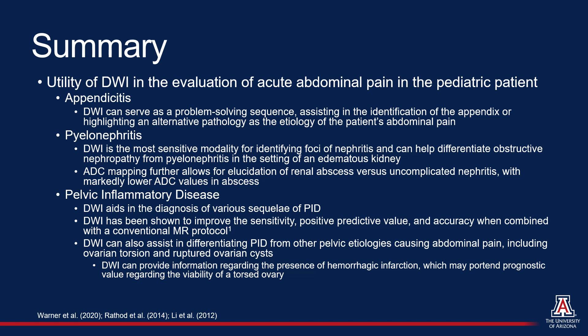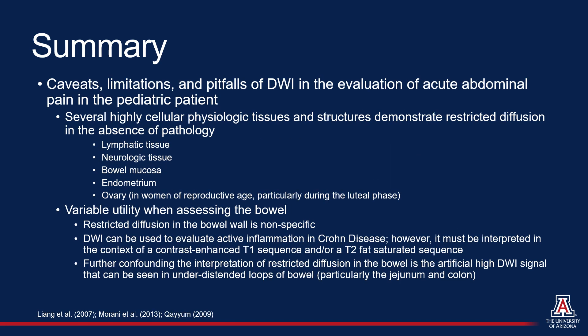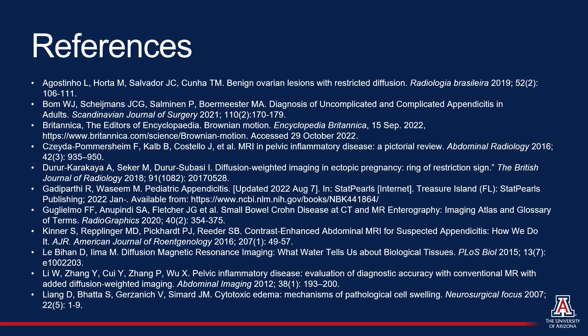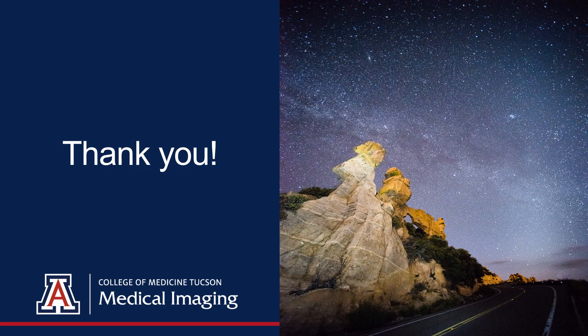In summary, DWI is a valuable problem-solving sequence in the evaluation of acute abdominal pain, and knowledge of DWI properties can assist radiologists in the interpretation of MRI examinations performed for acute abdominal pain, particularly when performed with a rapid, non-contrast enhanced protocol. DWI does have limitations, such as the restriction of dense physiologic tissue, and is best interpreted in conjunction with standard T1 and T2-weighted sequences. Thank you.